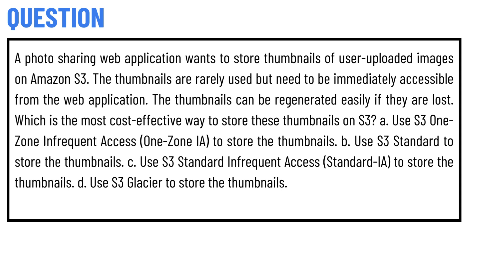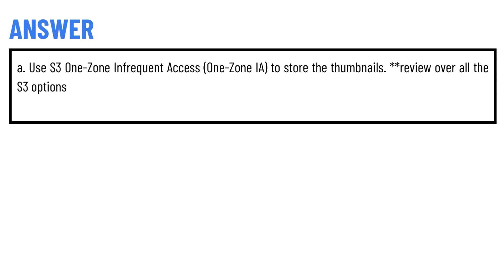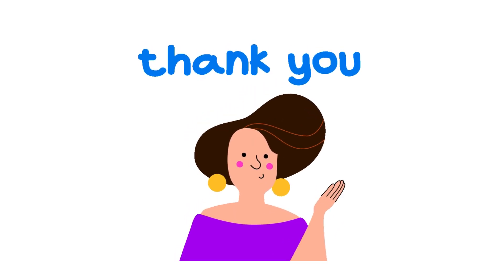Option C: Use S3 Standard-Infrequent Access (Standard-IA) to store the thumbnails. Option D: Use S3 Glacier to store the thumbnails. The correct answer is Option A — use S3 One Zone-Infrequent Access (One Zone-IA) to store the thumbnails. Review all these S3 options, and that's the correct answer to the question.